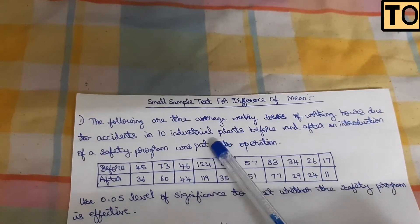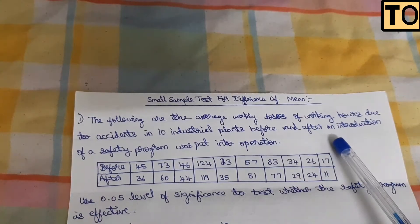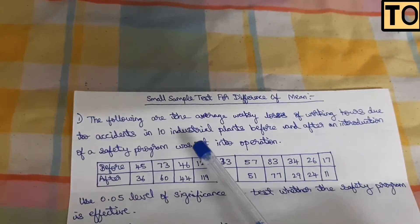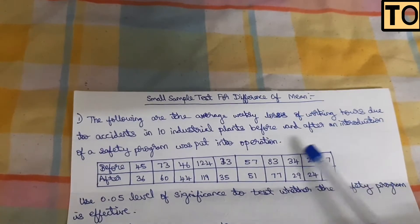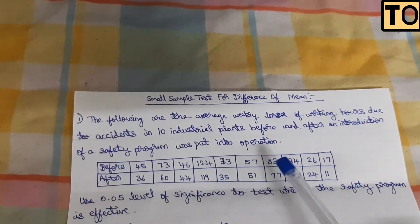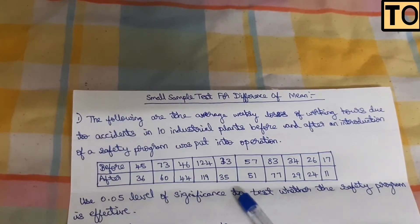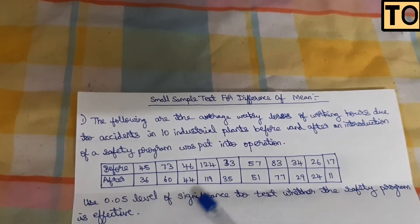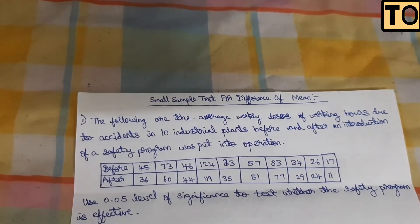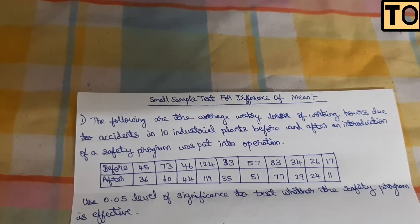We will talk about the following problem: the average vehicle losses of working hours due to accidents in 10 industrial plants, before and after an introduction of a safety program was put into operation. Use 0.05, that is 5% level of significance, to test whether the safety program is effective.